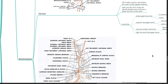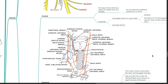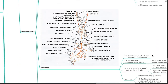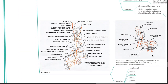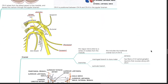Divisions of cranial nerve 10 include the cranial part, cervical part, thoracic part, and abdominal part. The cranial division: the vagus nerve arises by a series of rootlets from the medulla, including the traditional cranial root of cranial nerve 11. Branches at the cranial division include the meningeal branch to the dura mater, which is sensory, with fibers of C2 spinal ganglion neurons coursing along with cranial nerve 10, and the auricular branch.